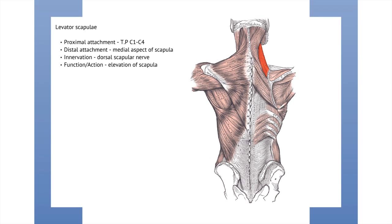Levator scapulae is quite a simple one. Its proximal attachment is the transverse processes of C1 to C4, and its distal attachment is the medial aspect of the scapula. It is innervated by the dorsal scapular nerve, and its function is to elevate the scapula.